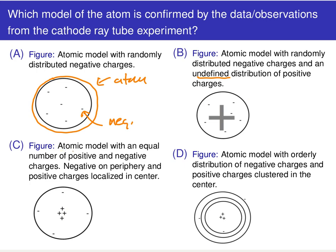Or does Thomson's work suggest choice C — an atomic model with an equal number of positive and negative charges, where negative charges are on the periphery and all the positive charges are localized in the center?